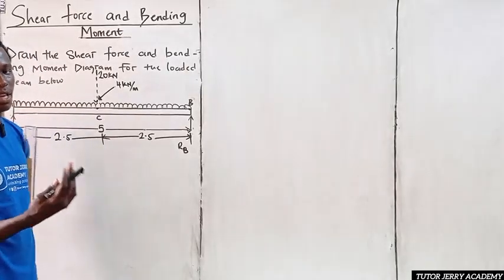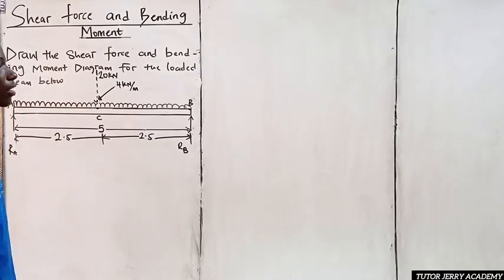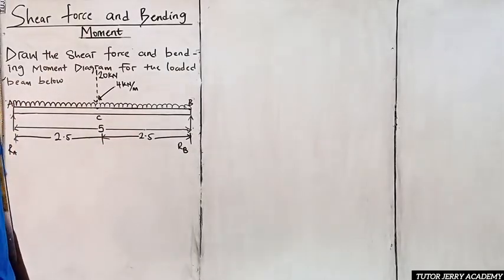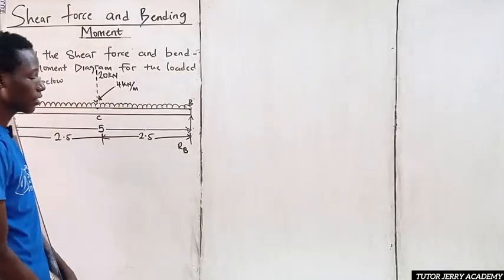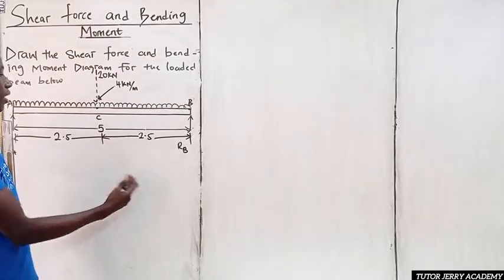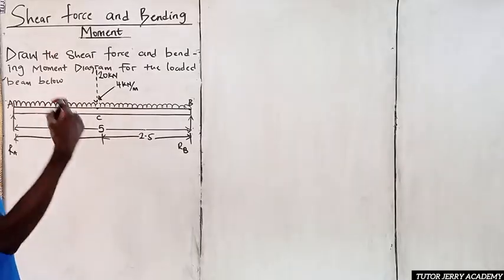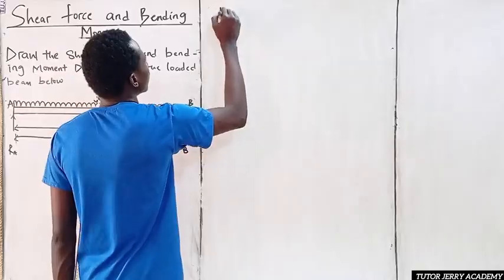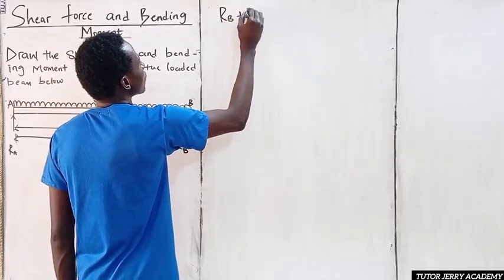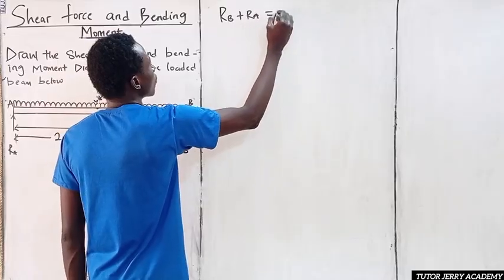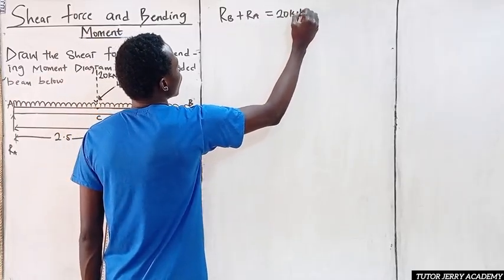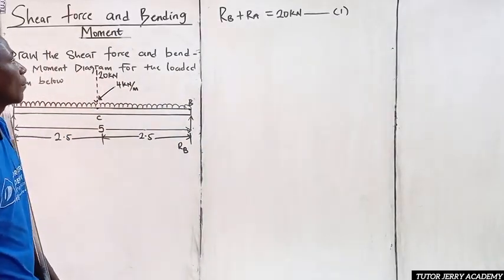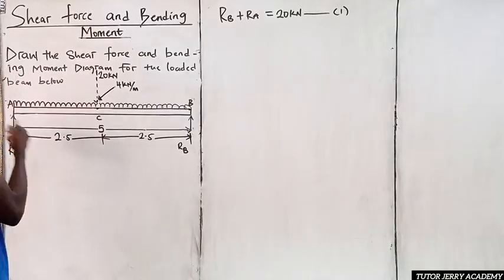The first thing we'll be looking for is the reaction at B and the reaction at A. We know that the sum of upward forces equals the sum of downward forces. So Rb plus Ra equals 20 kilonewtons. This is equation one.